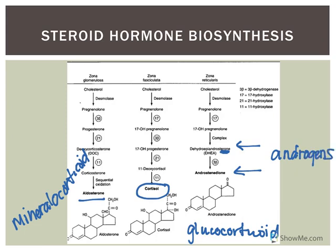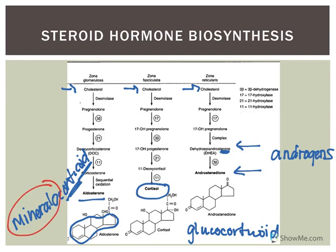Regarding mineralocorticoid versus glucocorticoid terminology: the '-coid' refers to steroid, so all of these are steroid hormones with a central steroid nucleus, making them lipophilic and hydrophobic. They are all derived from cholesterol. 'Corte' refers to being produced in the adrenal cortex. 'Mineralo' refers to mineral metabolism — aldosterone is involved in potassium and sodium. 'Glucocorticoid' is named for its effects on glucose metabolism.